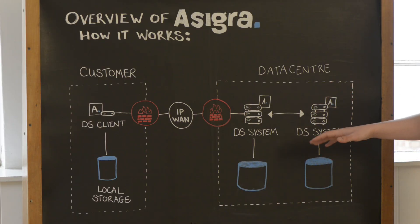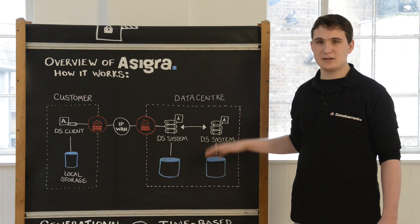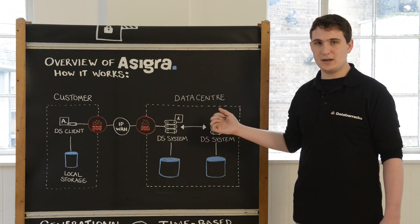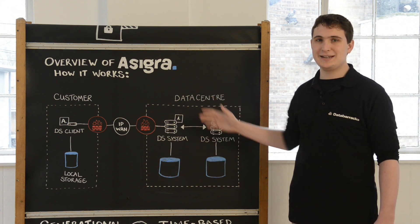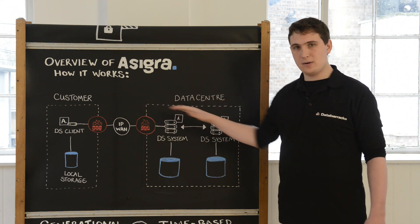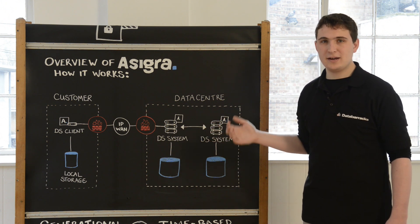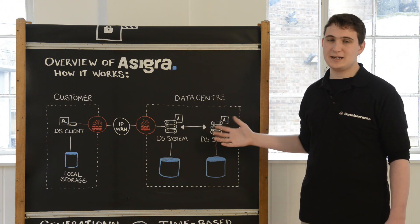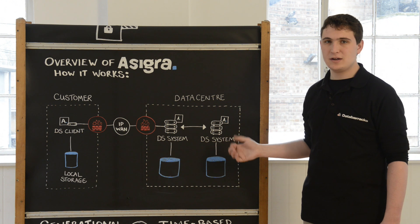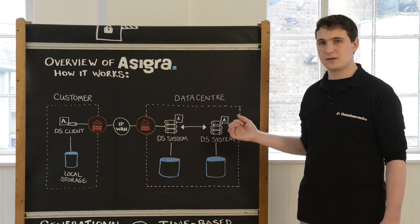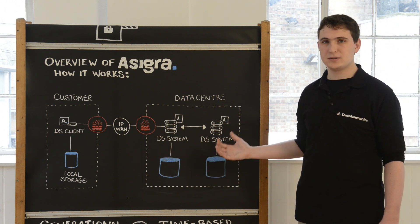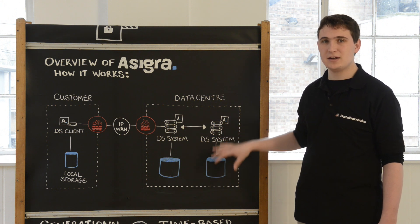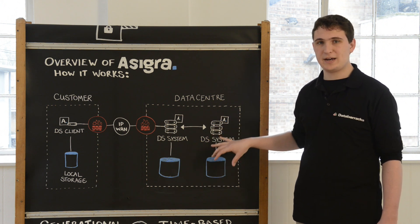The DS systems can pick up on deduplication and common file elimination, which means that you end up sending less data over the WAN link. The other advantage that the DS systems have is they include an autonomous healing process, which means they're continually scanning for corrupt files or any file discrepancies that may exist with the actual backup data.